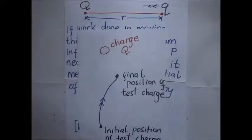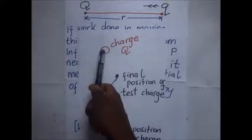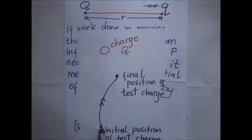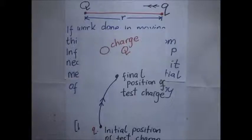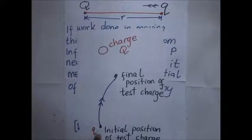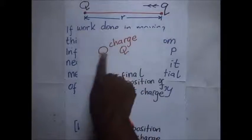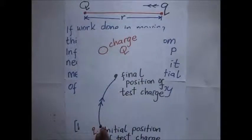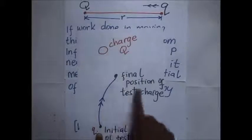In this diagram we have a charge Q which is positively charged. We also have a test charge in its initial position. This test charge is positively charged and it is within the electric field of the larger charge Q. This test charge was then moved from one point to another point.